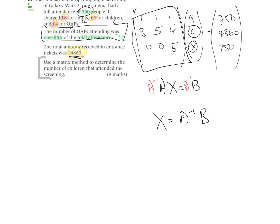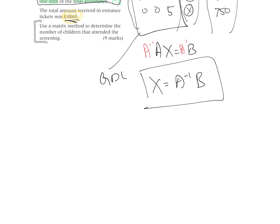This inverse, just use your GDC. You do not need to know how to do a 3 by 3 by hand. And you just multiply this out with your GDC. And you should end up with a matrix that says 420, 180, 150, which is A, C, and X. And so from here, quite clearly, we can see that C is 180 in total.